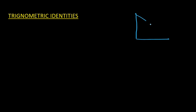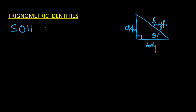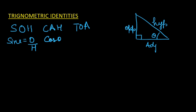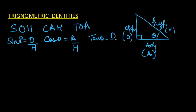So if we have a right angle triangle and this angle is theta, then with respect to theta, this becomes opposite, adjacent, and this is the hypotenuse. And we know SOH CAH TOA: sin theta is opposite over hypotenuse, cos theta is adjacent over hypotenuse, and tan theta — tangent of theta — is opposite over adjacent.